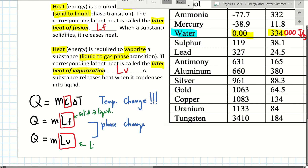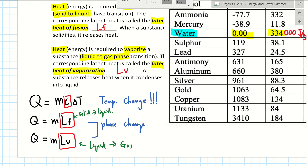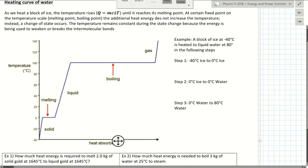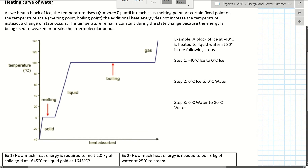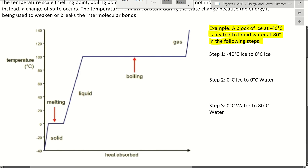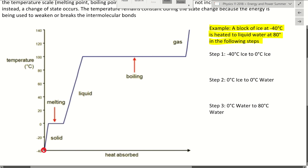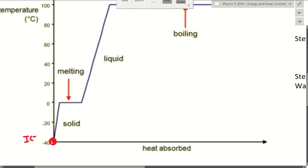Let's look at a worked example with water. A block of ice at negative 40 degrees Celsius is heated to 80 degrees Celsius — how much total energy is needed? You might say 'just use Q = mcΔT,' but be very careful: this involves a phase change. The ice rises in temperature from negative 40 to zero degrees Celsius — that's the first temperature-change section.